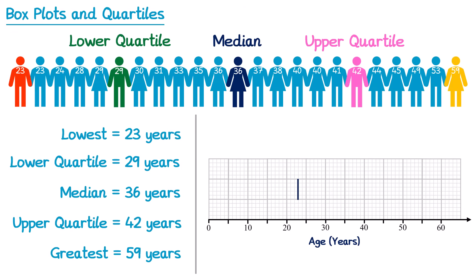To draw a box plot you draw a vertical line at each of those values: one at 23 for the lowest value, one at 29 for the lower quartile, one at 36 for the median, 42 for the upper quartile, and 59 for the largest value. To complete this box plot we connect up the lower quartile to the upper quartile. We draw lines that go from the lower quartile through the median to the upper quartile, and this forms the box — which is why it's called a box plot. We then connect the lowest value to the left-hand side of the box, and connect the right-hand side of the box up to the greatest value, and this is a completed box plot.